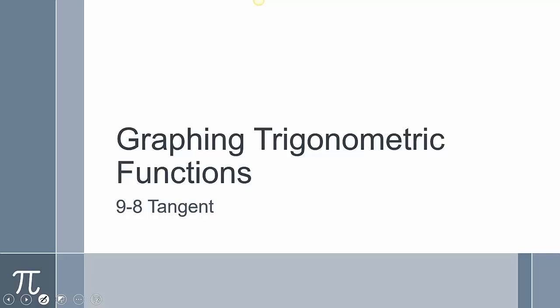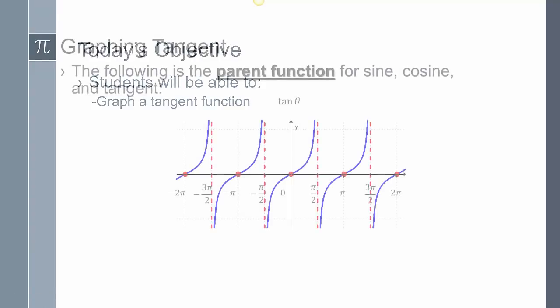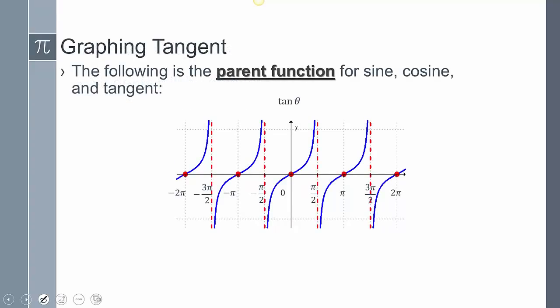This is section 9-8, and we're going to take a look at tangent graphs. So we're going to graph a tangent function. This is the parent graph for tangent. I've already introduced it for sine and cosine, and now we are at tangent.